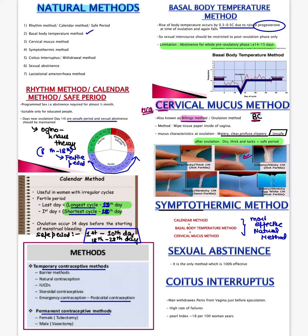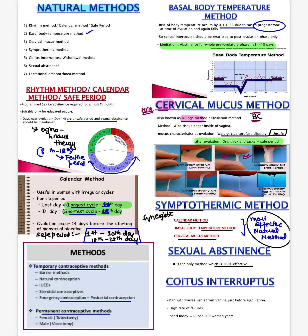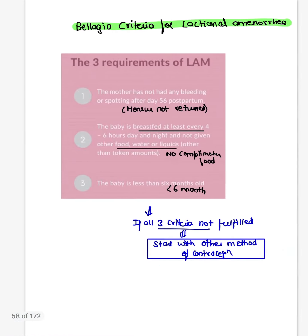The symptothermic method is a synergistic method combining the calendar method, basal body temperature, and cervical mucus — this is the most effective natural method. Sexual abstinence means not having sex — 100% effective. Coitus interruptus means withdrawing the penis just before ejaculation, but there is a high risk of failure even with one drop of sperm. Coitus interruptus is not preferred; sexual abstinence is best.